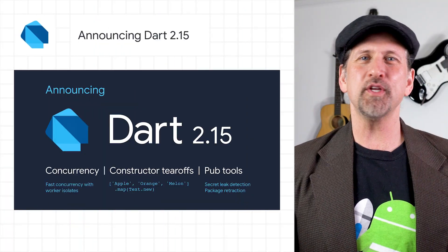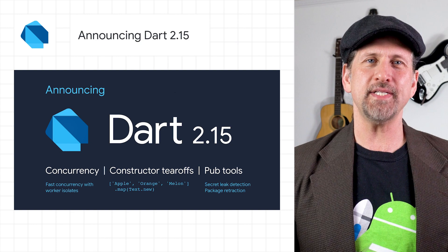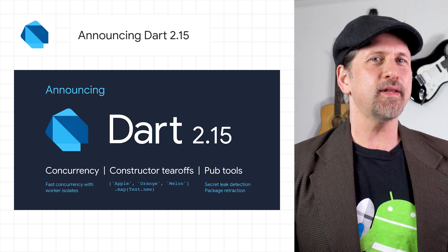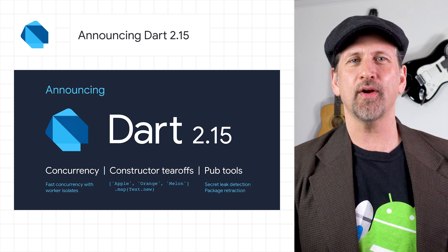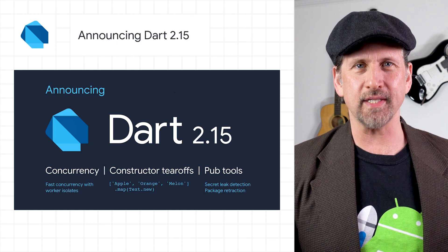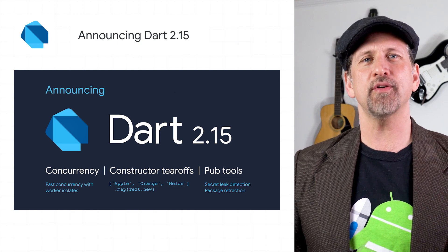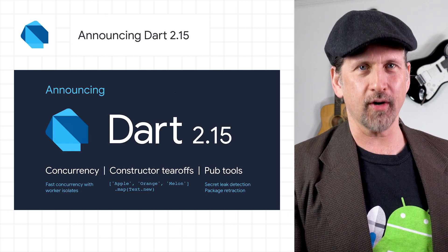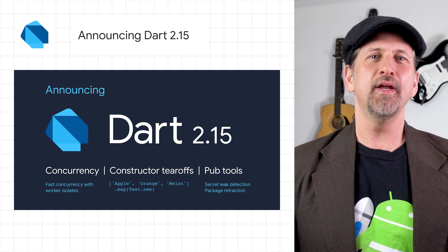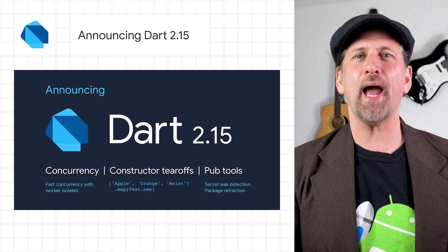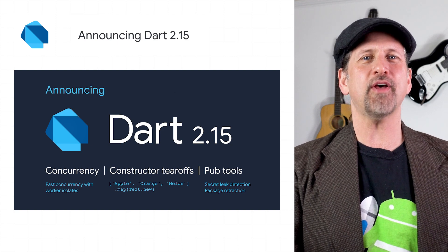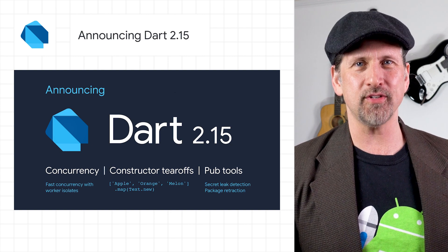We released version 2.15 of the Dart SDK that powers Flutter. It includes fast concurrency with worker isolates, a new constructor tear-off language feature, improved enum support in the Dart core library, new features for package publishers, and more. The post has lots more detail on what's in Dart 2.15.